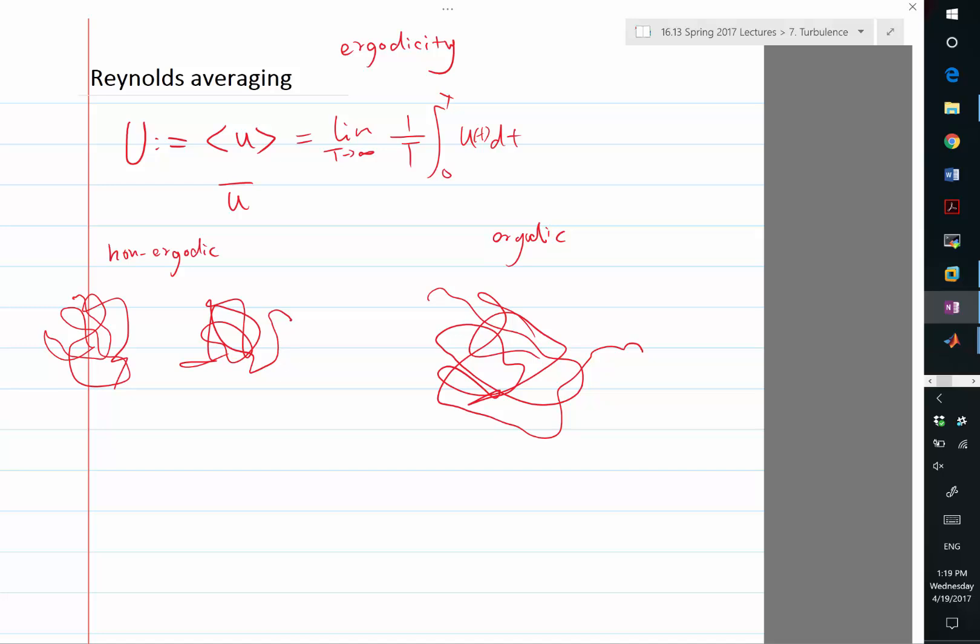For fluid dynamics, the space is the phase space, the collection of all possible snapshots of a velocity field. It is a tremendously high dimensional space, because the number of dimensions, if you think of a discrete simulation, would be three, which is the dimension of space, times the number of grid points you have in your simulation.